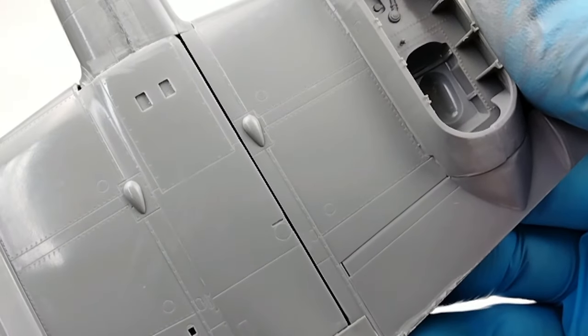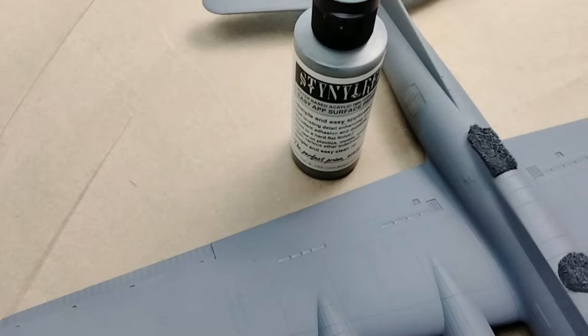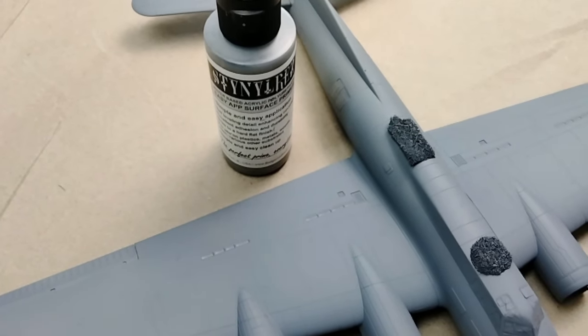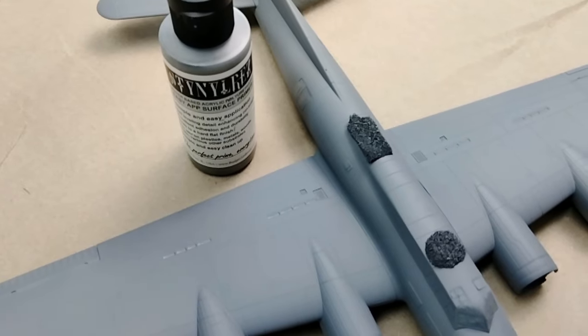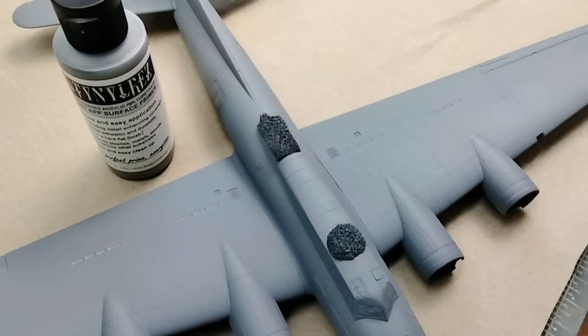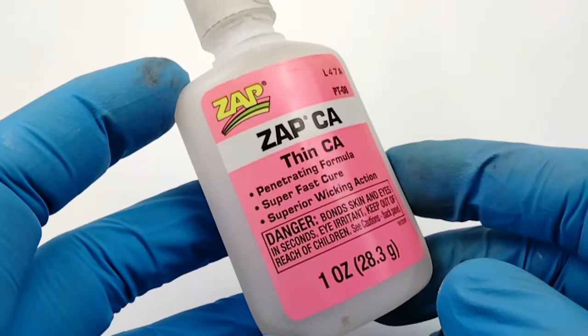But as all modelers know, even with new tool kits, this is not always the case. The first step in filling gaps and seams is to identify where those gaps are going to be. In the previous video of the series, I took this B-17 and primed it, making it very easy to spot all the places that I'm going to need to pay attention to.